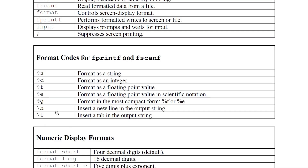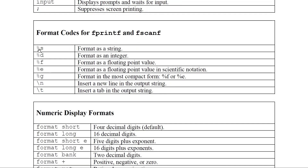Format specifiers used with fprintf and fscanf: %s for string, %d for integer, %f for floating point, %e for floating point in scientific notation, %g for the most compact of f or e format. \n begins a new line and \t inserts a tab.